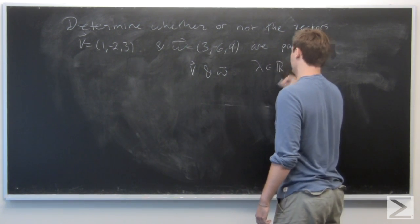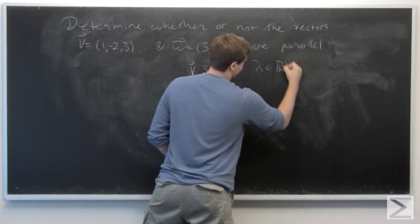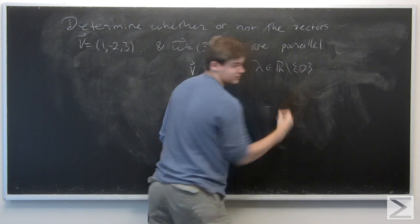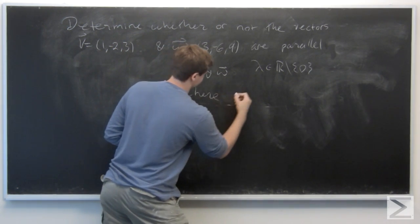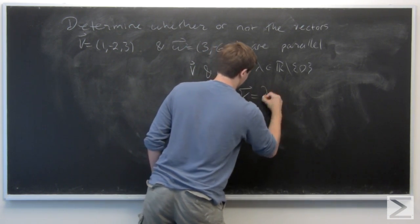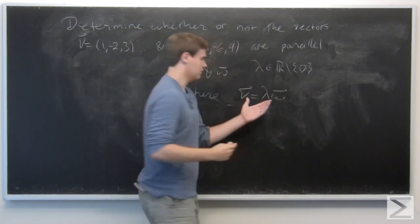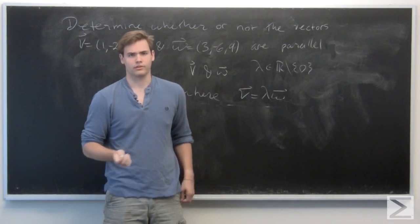a non-zero real number where v is equal to lambda w. And this just means that one is a scalar multiple of the other.